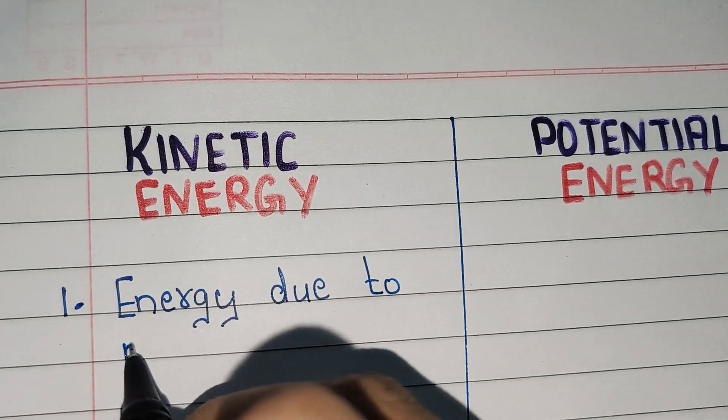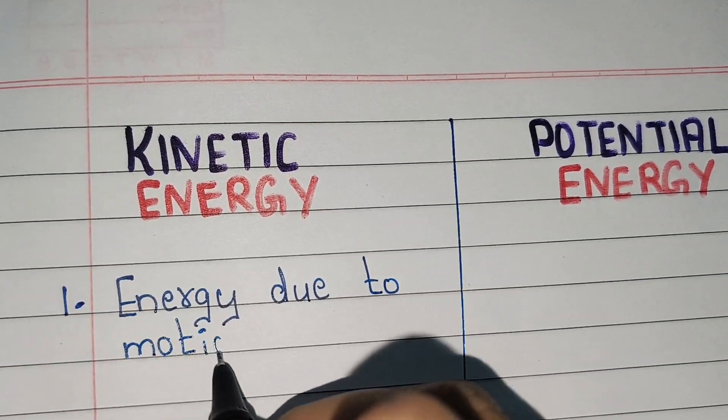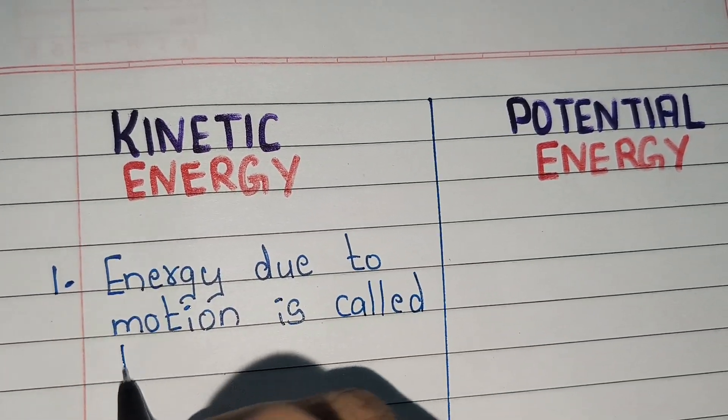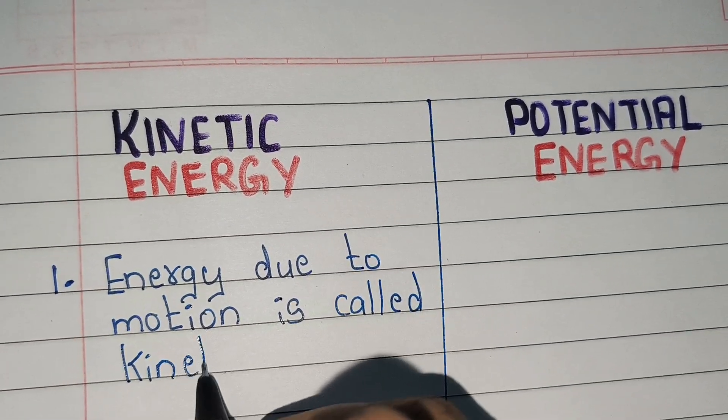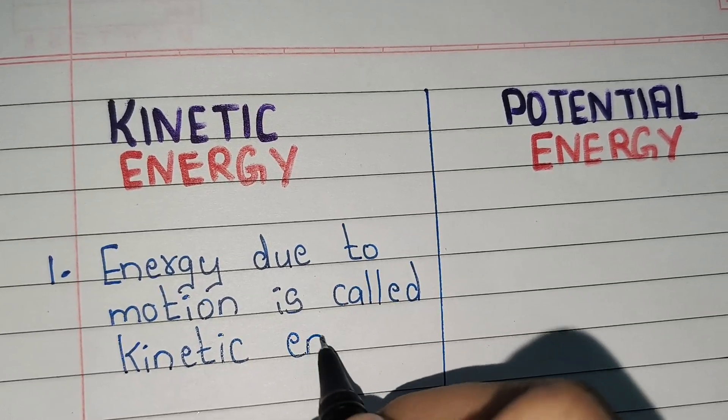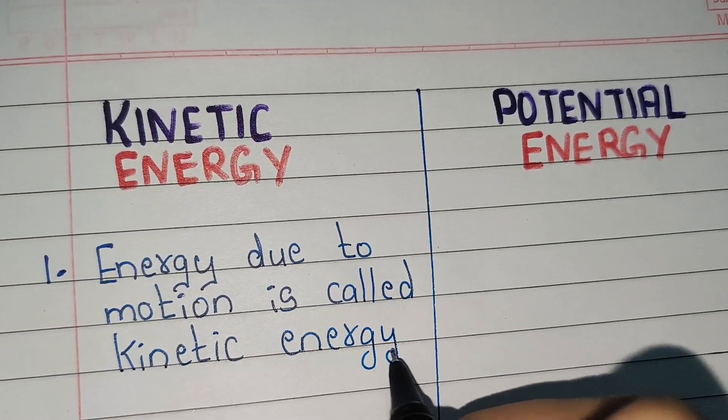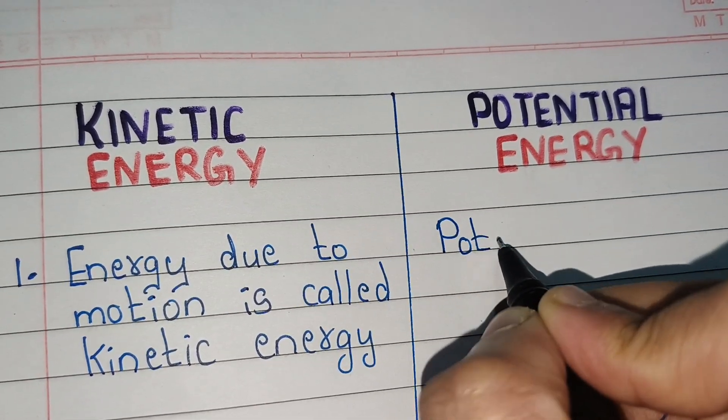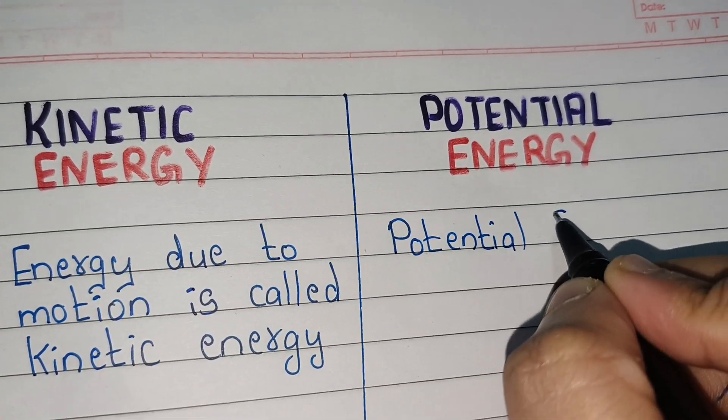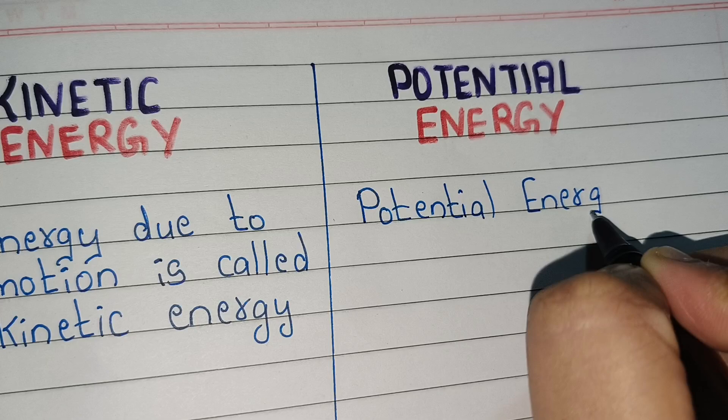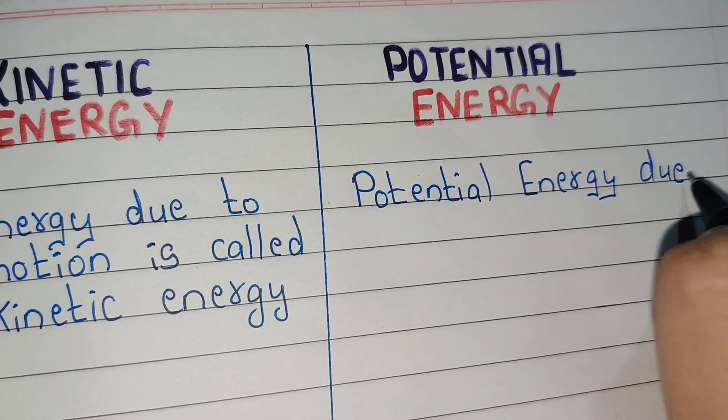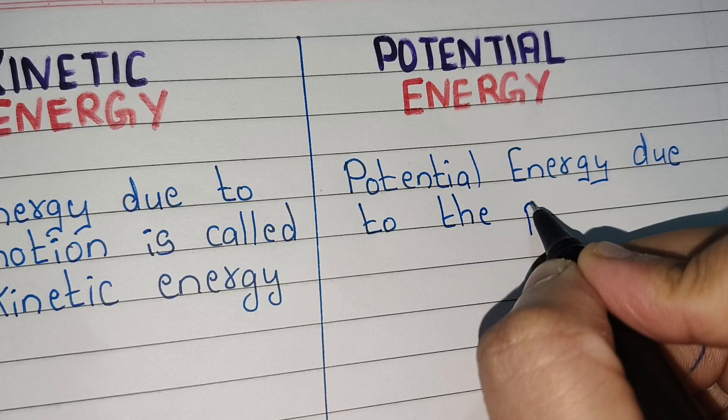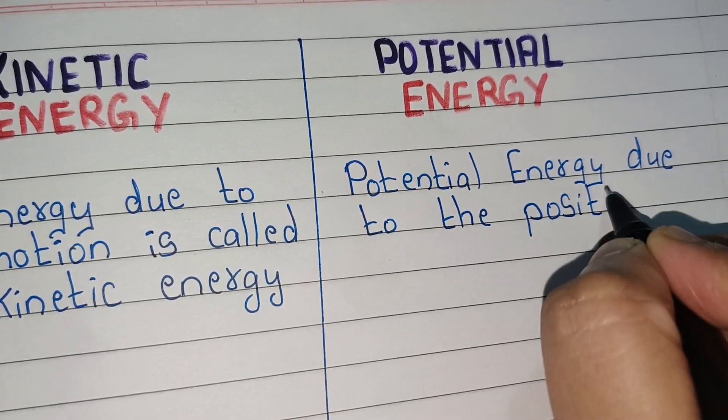First, energy due to motion is called kinetic energy. Energy due to position is called potential energy.